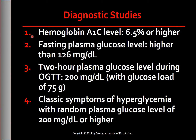Hemoglobin A1c level 6.5% or higher. Fasting blood glucose level, or FPG, higher than 126 mg per deciliter. Fasting is referred to as no caloric intake for at least 8 hours. Two-hour plasma glucose level during the oral glucose tolerance test, 200 mg per deciliter or higher, with a glucose load of 75 g.